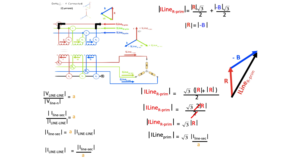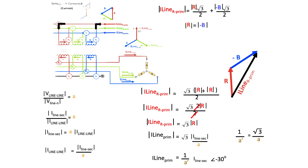I'd like to define the term 1 over A-prime as the ratio of root 3 over the turns ratio, just to make our equation a little bit easier to look at. So we can rewrite that equation such that the primary line current is equal to 1 over A-prime times the secondary line current. Those are magnitudes; however, we can change them into phasors by simply adding the angle of the phasor, which we've already developed. We know that the secondary leads the primary by 30 degrees. So in phasor terms, I-line-primary is equal to 1 over A-prime times I-line-secondary at minus 30 degrees.